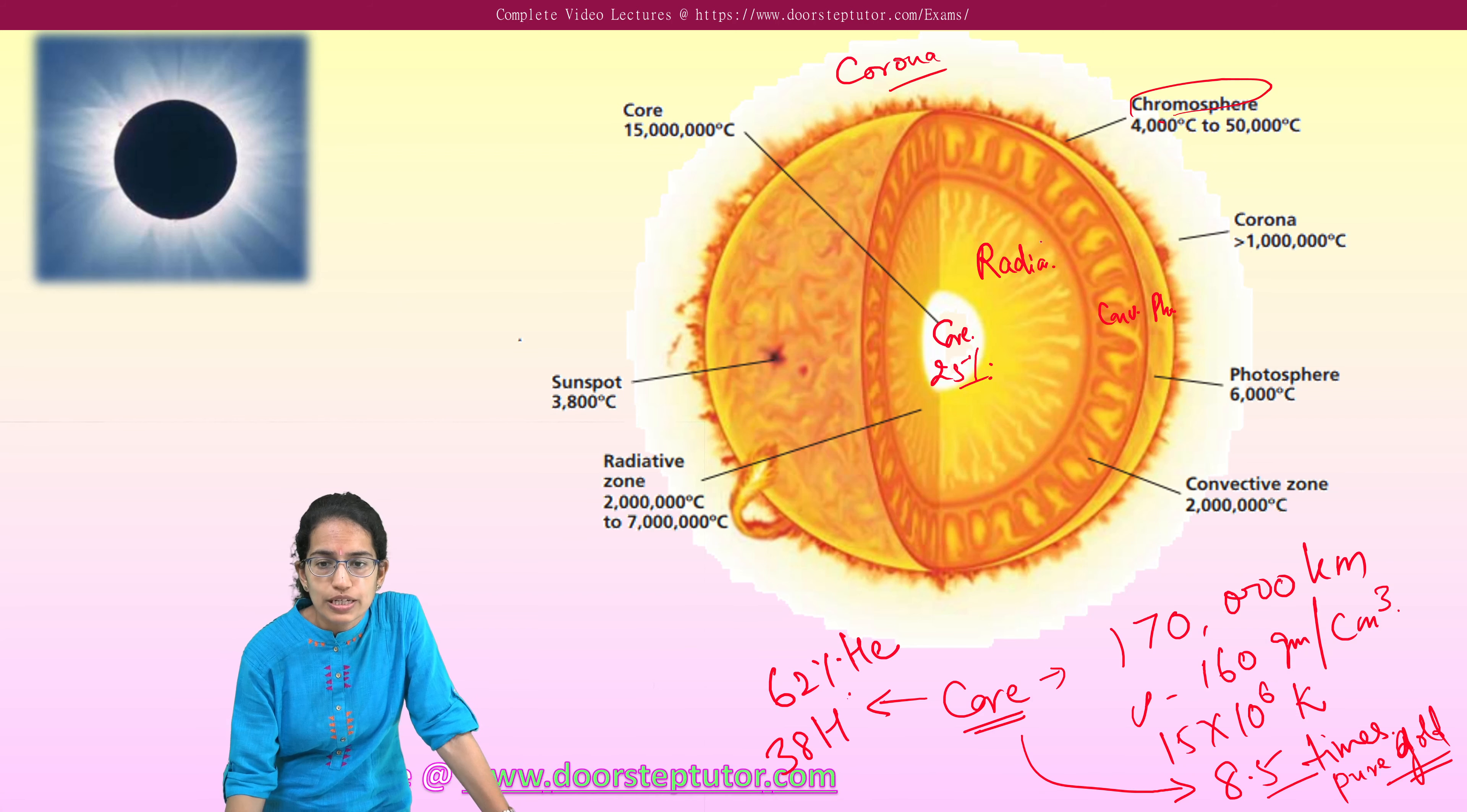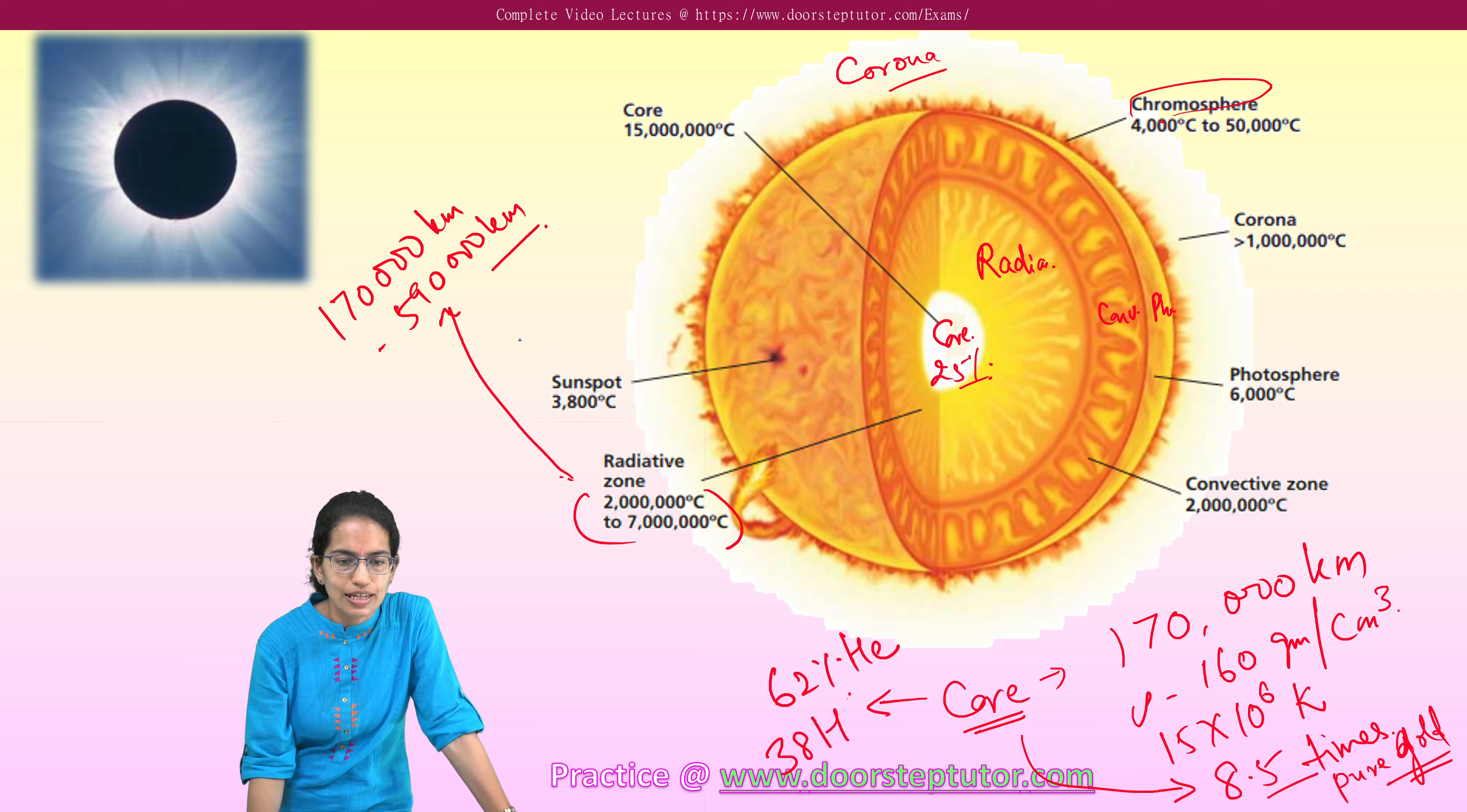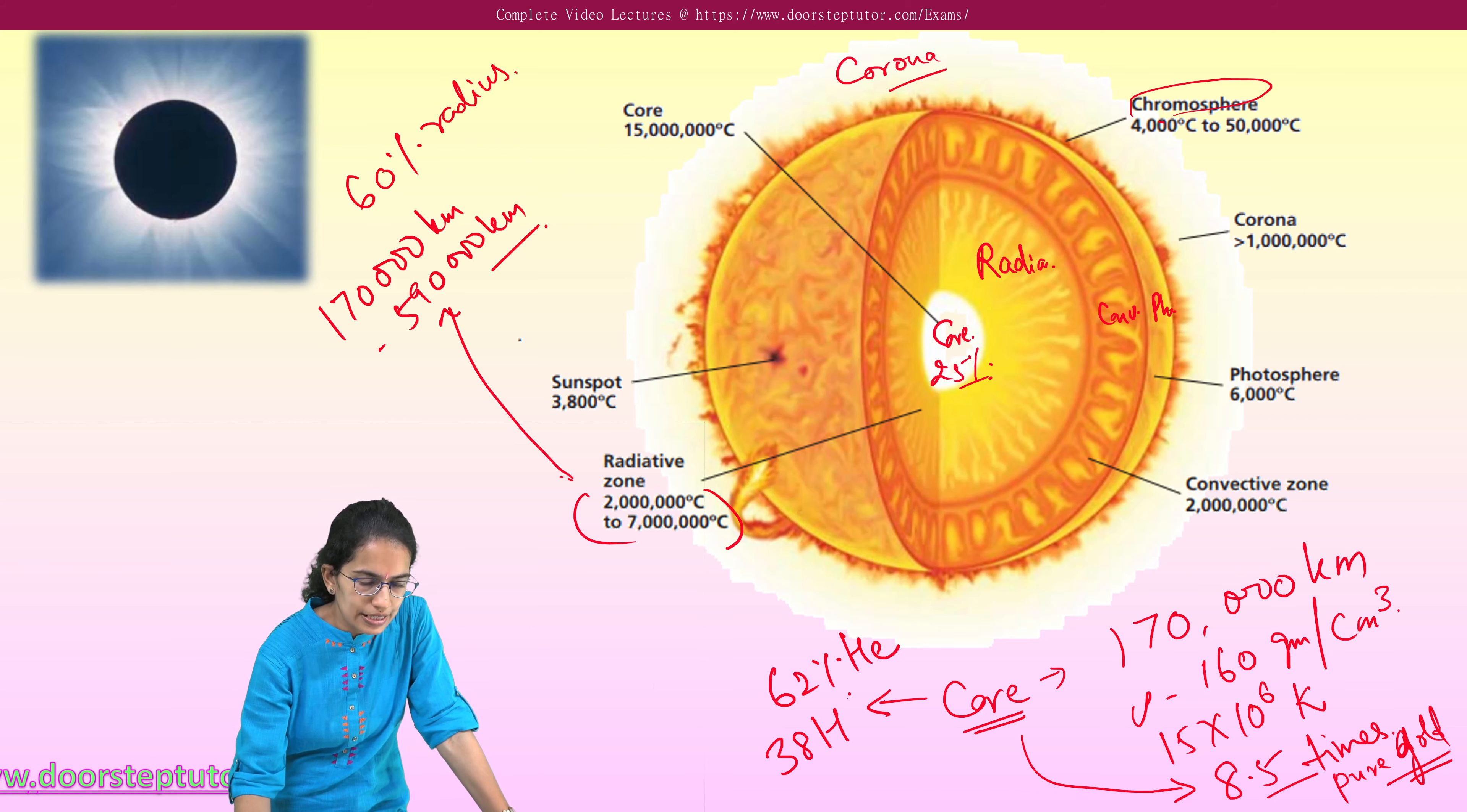Next to the core is the radiative layer. Now this radiative layer, the temperatures are already mentioned here. This radiative layer starts from 170,000 kilometers to around 590,000 kilometers. Here most of the process would take place through radiation as the name, it is the radiative layer. 60% of the radius is formed by the radiative layer.